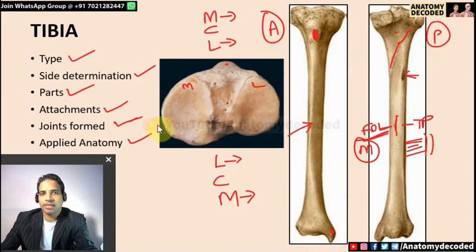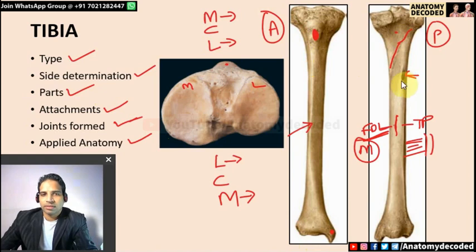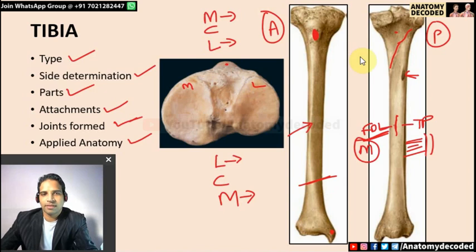Applied anatomy of tibia: tibia is a common site for osteomyelitis, usually involving the upper end. Because very few muscles are attached to the lower tibia, fracture of the lower end results in delayed union. Fractures of the upper end heal sooner because the nutrient artery is directed towards the upper part.